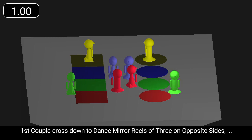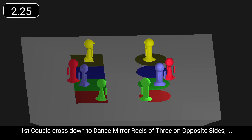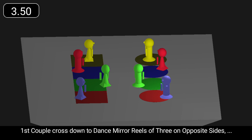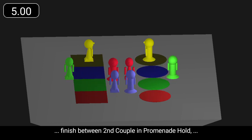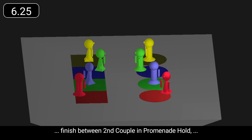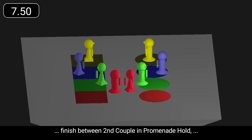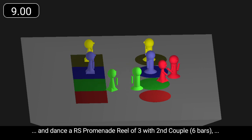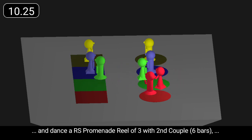First couple cross down to dance mirror reels of three on opposite sides. Finish between second couple in promenade hold. And dance a right shoulder promenade reel of three with second couple.